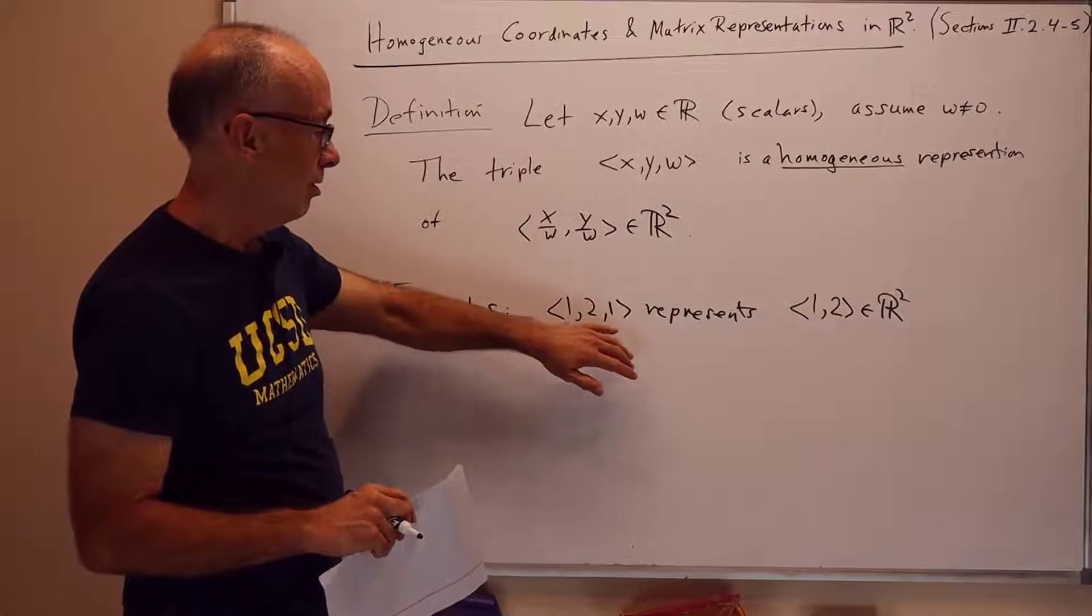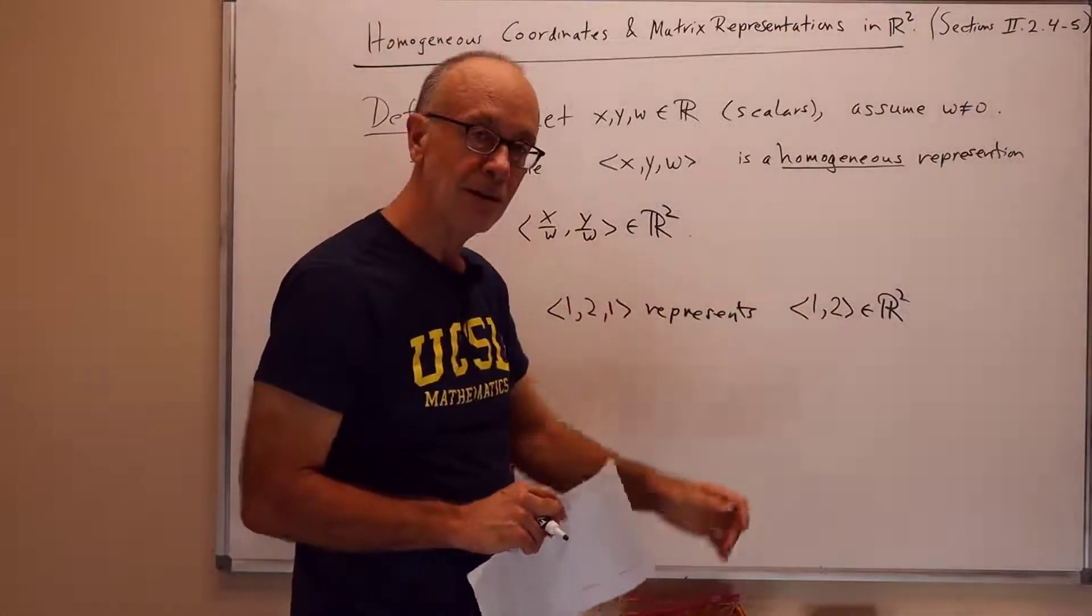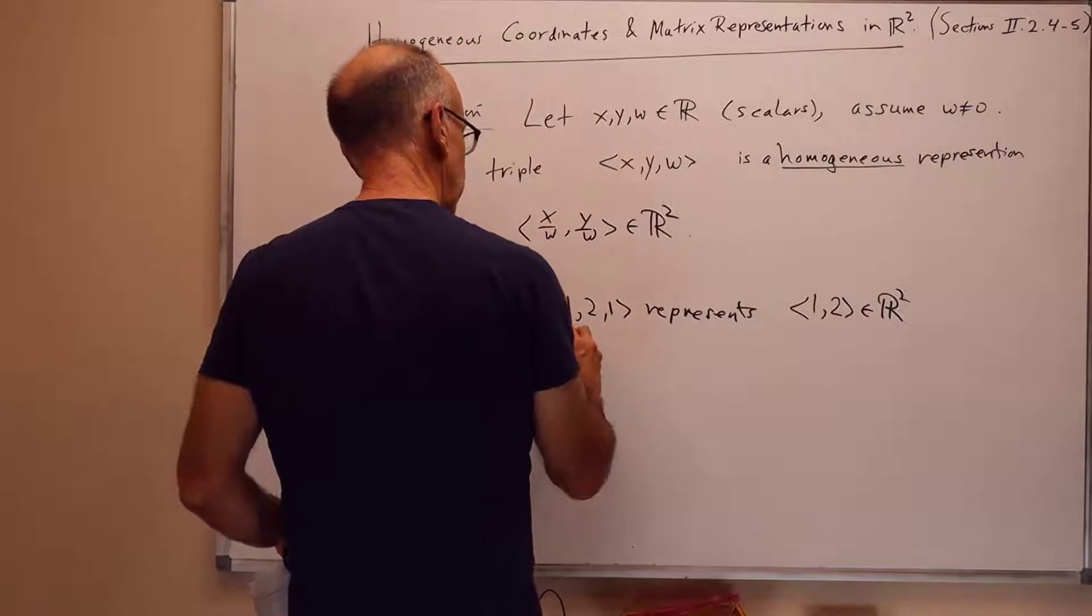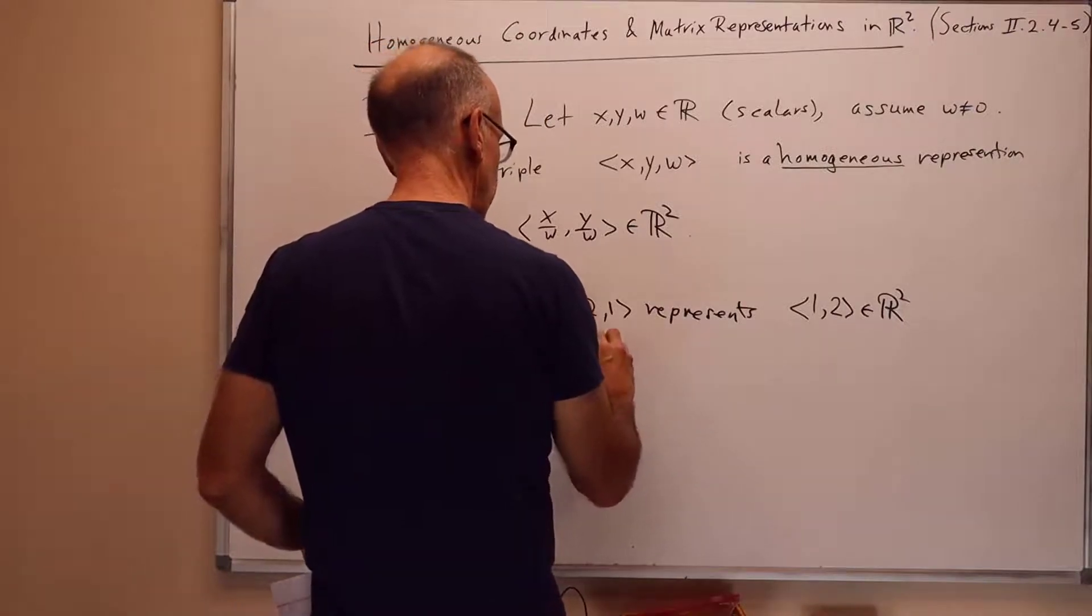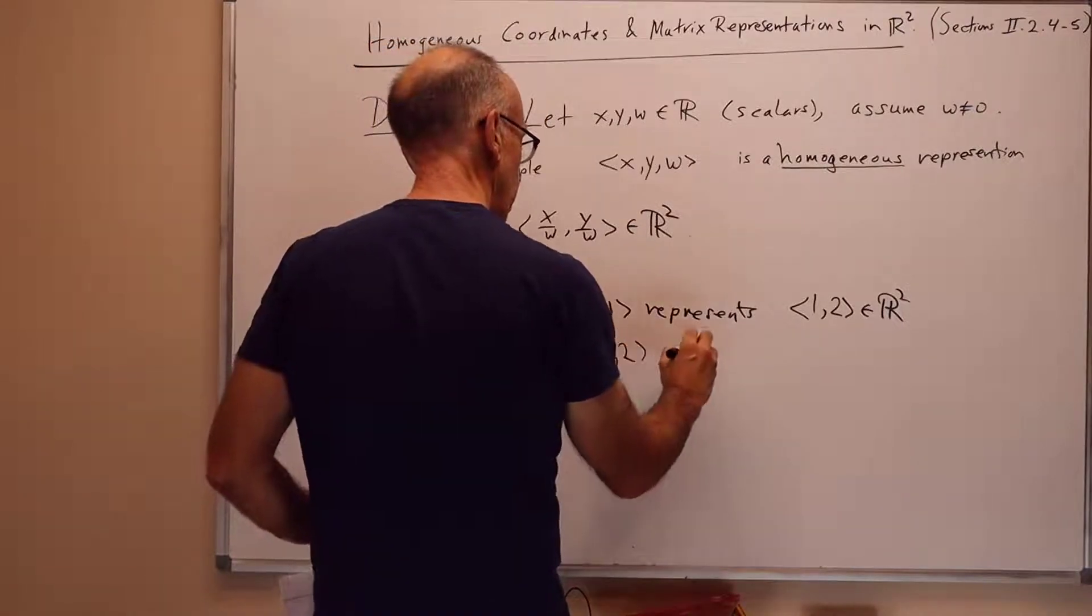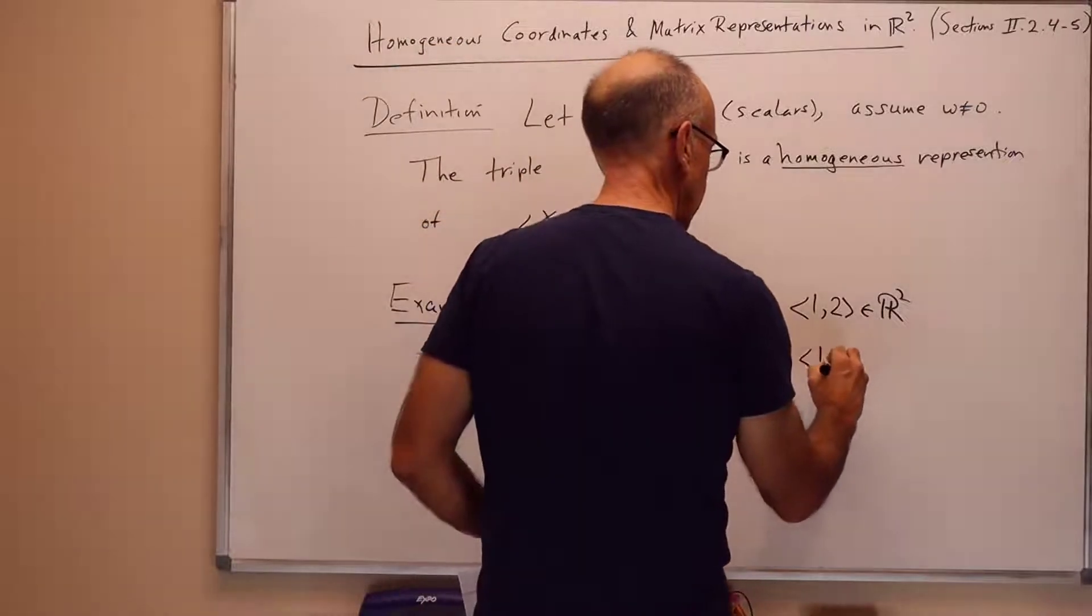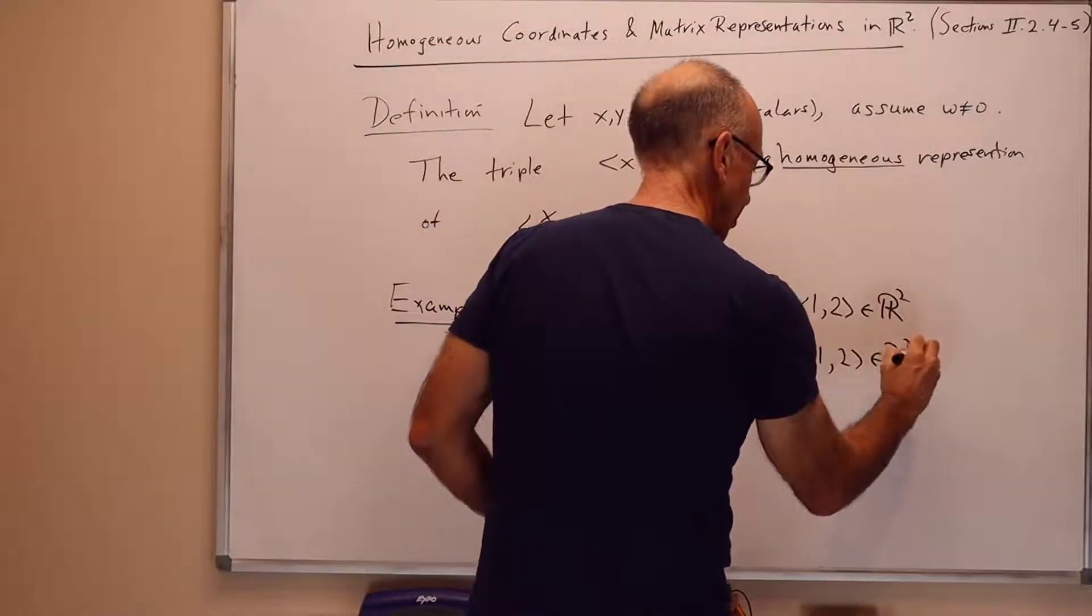So, 1 divided by 1 is 1, 2 divided by 1 is 2, so 1, 2 is what it represents. If we multiply by 2, <2, 4, 2>, this also represents 1, 2 in R2. Exactly the same point, right?